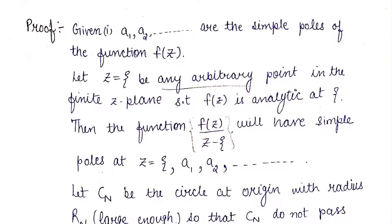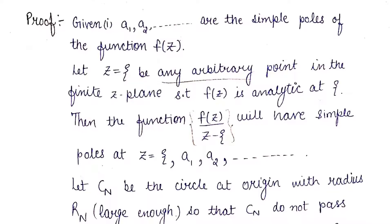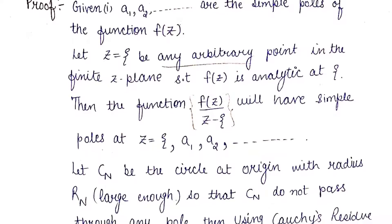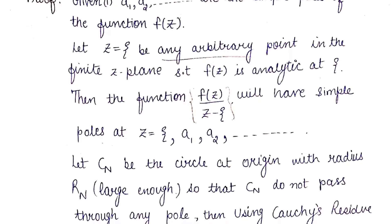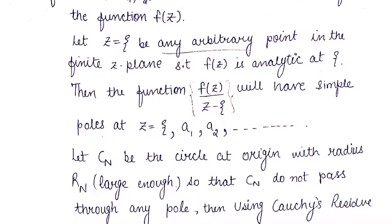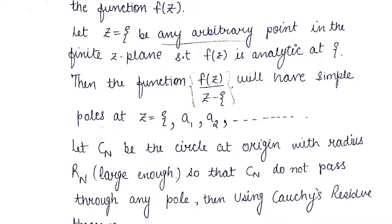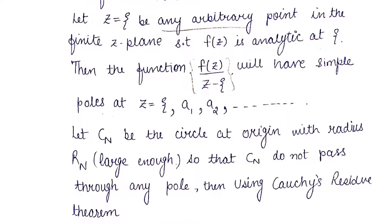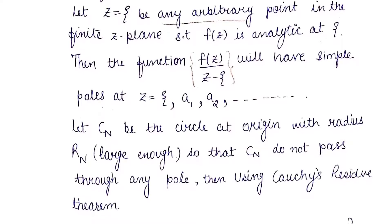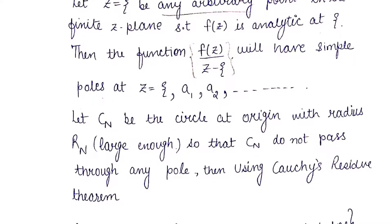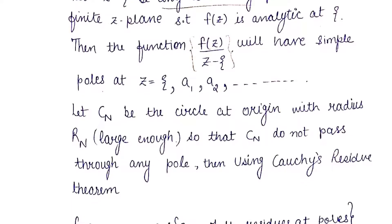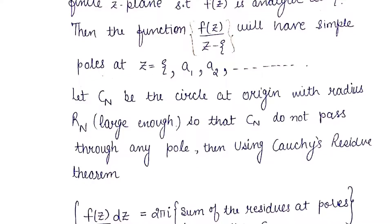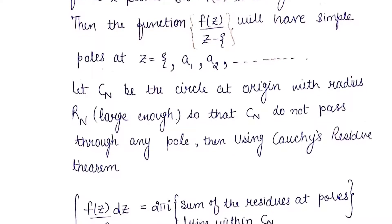We are given that a₁, a₂, aₙ, ... are the only simple poles of f(z). We start the proof by taking any arbitrary point ζ in the z-plane, different from all the poles a₁, a₂, aₙ, so f is analytic at ζ. We then consider the function f(z)/(z − ζ), which will have poles at z = ζ, a₁, a₂, and so on. We will apply Cauchy's residue theorem to this constructed function f(z)/(z − ζ).